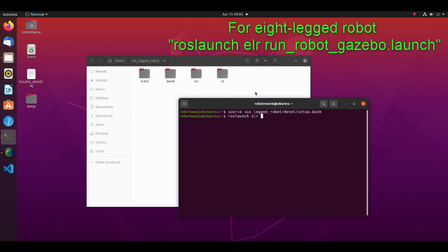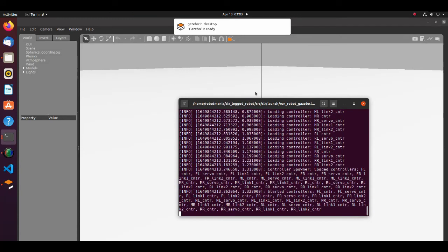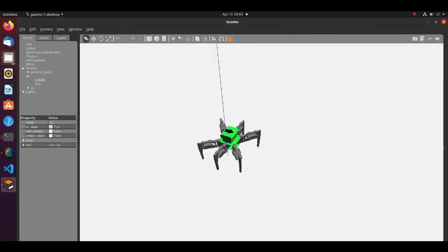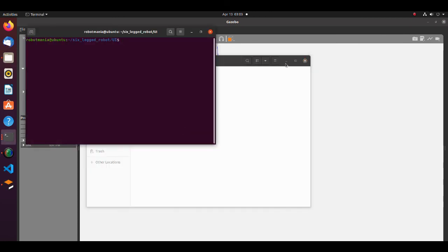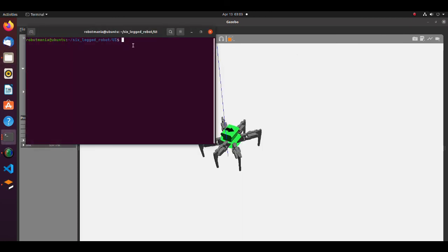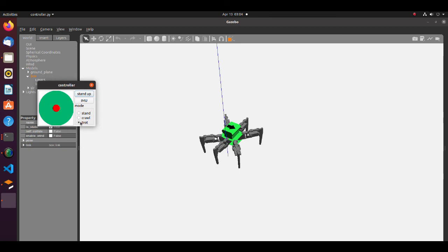Open a new terminal and execute source command. Run roslaunch robot gazebo launch file. Move to the UI directory. Open up terminal and execute the controller python script. Now you can do the simulation.